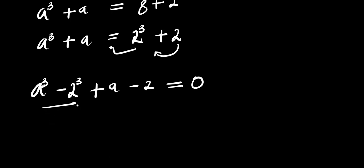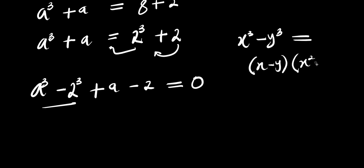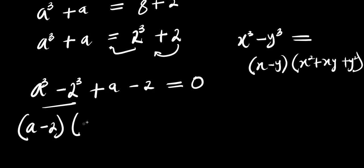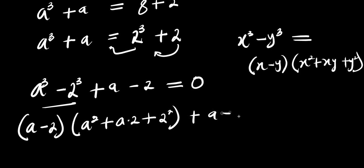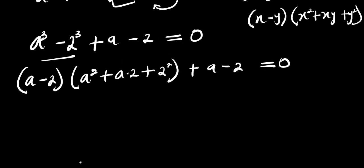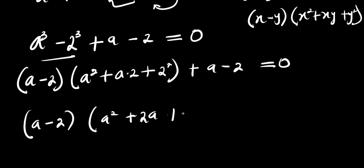So what we are going to do is expand this. Now, if you have x cubed minus y cubed, this equals x minus y times x squared plus xy plus y squared. So from here, our a is x and 2 is y, so we have a minus 2 times a squared plus 2a plus 4, plus a minus 2, equals 0.